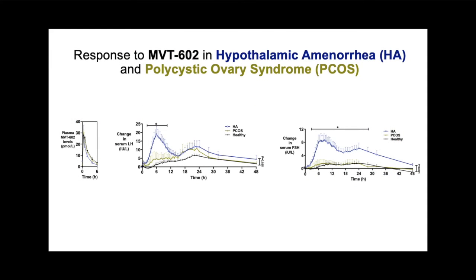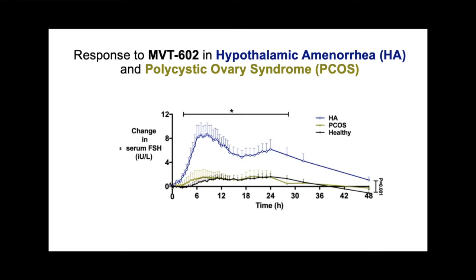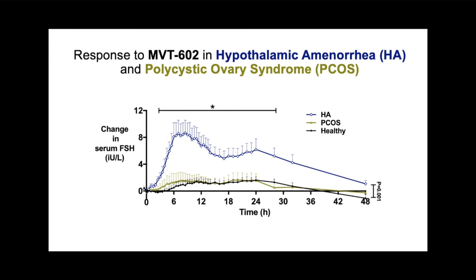Next, we investigated whether the endocrine profile of NVT602 differed in women with either of the two commonest causes of anovulation: polycystic ovary syndrome and hypothalamic amenorrhea. Whilst the LH rise was similar in women with PCOS as in healthy women, LH rises were markedly increased and expedited in women with hypothalamic amenorrhea, with a much earlier peak than other women. This was also true of the FSH rise, which has significant implications for the potential use of NVT602 as an ovulation induction agent in women with hypothalamic amenorrhea.